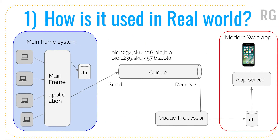I want to discuss two real-time use cases about messaging queues and their applications. If you look at the screen on the left side, you see a mainframe system — a legacy one — where a lot of computers are connecting to the mainframe application and all the data gets passed into the database. This is a typical setup you would see in legacy applications in stores.